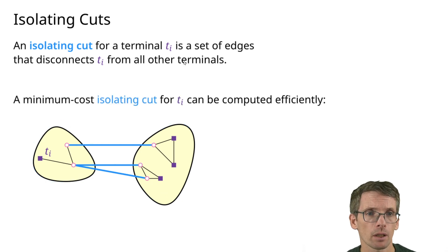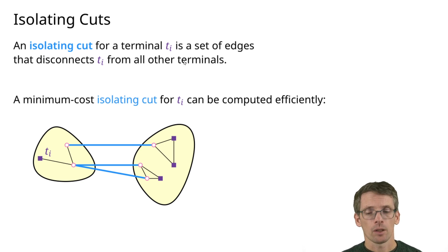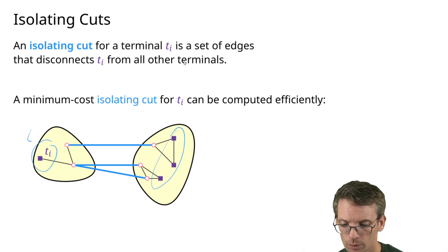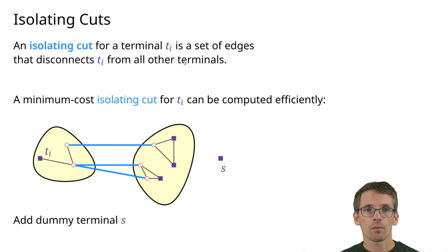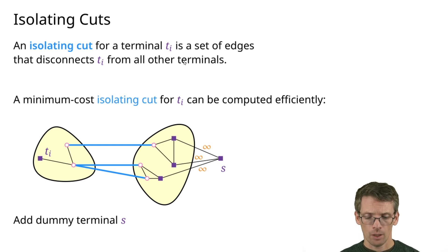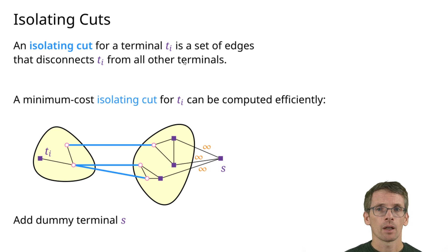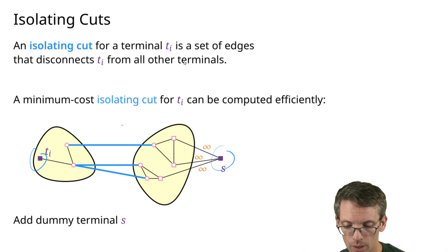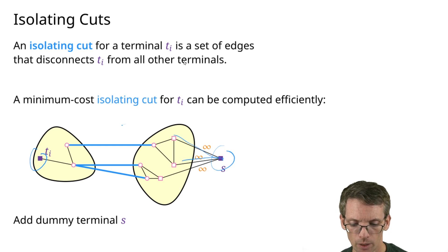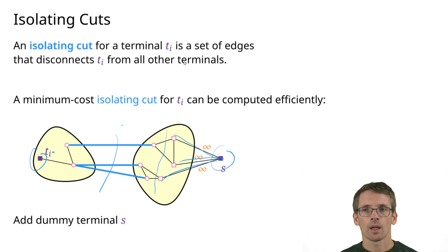We can compute a minimum isolating cut efficiently by reducing it to min s-t cuts. We need the min s-t cut to force the other terminals to be disconnected from t_i. So we introduce a dummy vertex s, connect it to all other terminals with edges of weight infinity, and now an s-t cut will separate s from t_i. Since s cannot be separated from the other terminals, it will also cut between t_i and all other terminals — giving us an s-t cut we can find efficiently.